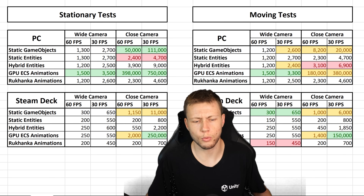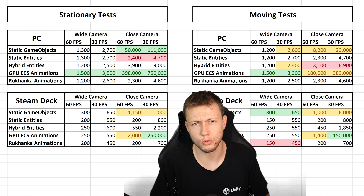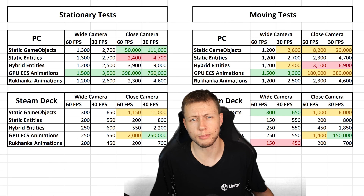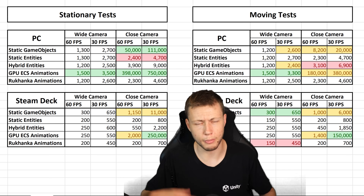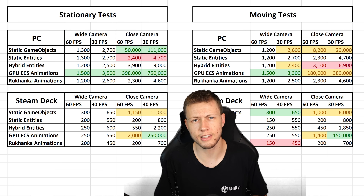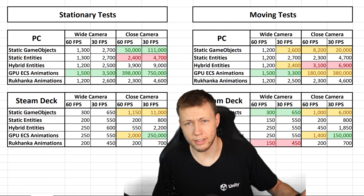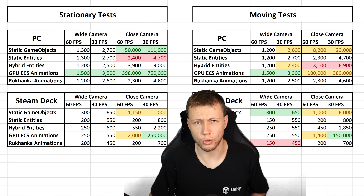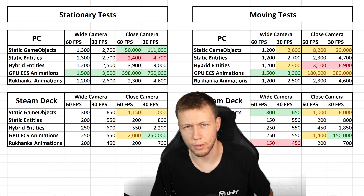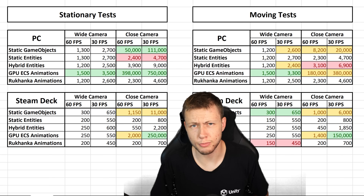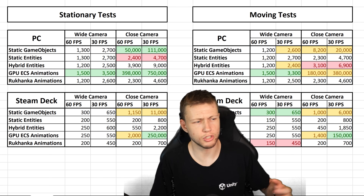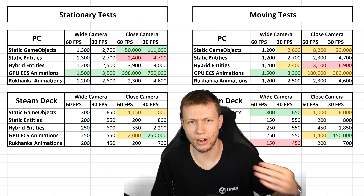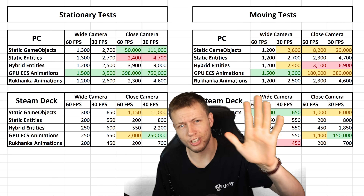Those are the results from my performance testing. I wanted to share these since I found them interesting — hope you did too. Let me know if you want to see more performance comparisons of different Unity ECS implementations, and let me know if there are ways I could improve these tests. I'll have a link in the description if you want to run this test on your own devices to see what numbers you get on your specific hardware. Keep in mind these performance numbers may change over time as Unity improves ECS and asset store manufacturers continue updating their assets. Hope you all have a fantastic rest of your day, and I'll see you in the next one.